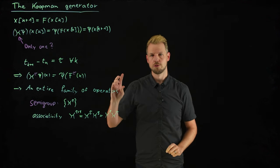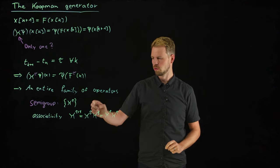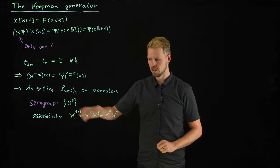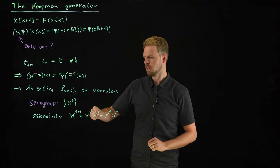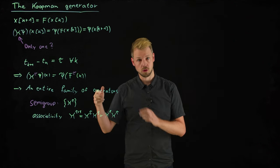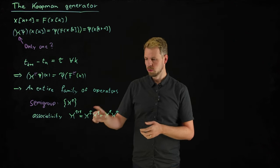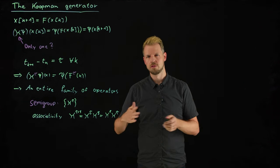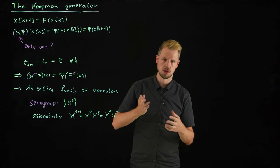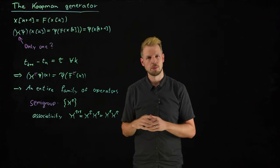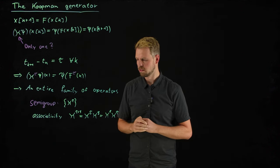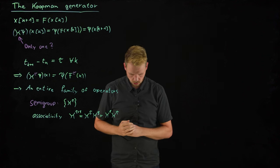In order to make it a full group, what we would require is that the inverse elements, so K to the minus tau and the identity, are also elements of this group. But we do not necessarily have invertibility because this is only valid for reversible systems. So we are talking about semigroups here.